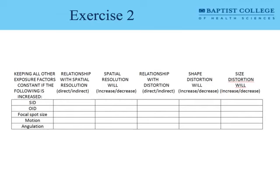Now here's the other way of thinking about things as they relate to spatial resolution and distortion — purely geometrical considerations. SID has a direct relationship with spatial resolution: as SID increases, spatial resolution increases. It also has an indirect relationship with distortion — as SID increases, distortion decreases, at least distortion from the magnification factor. Both shape distortion and size distortion decrease when SID increases because objects are less magnified.